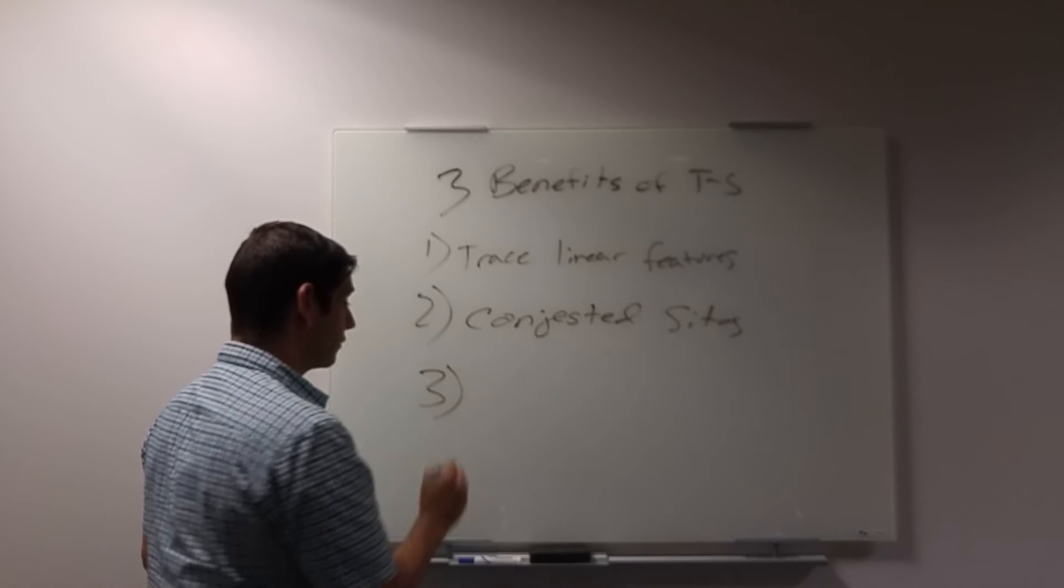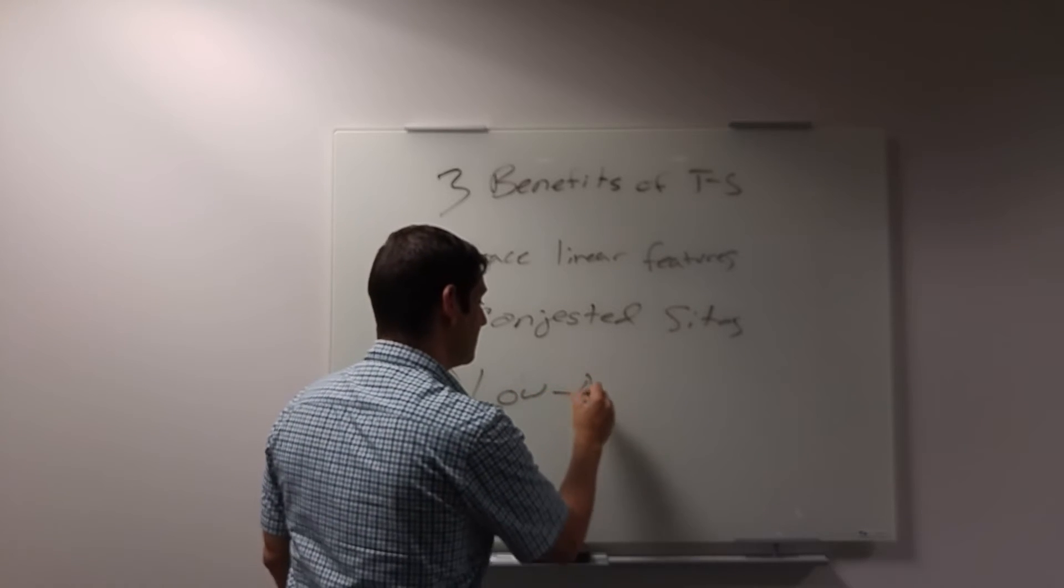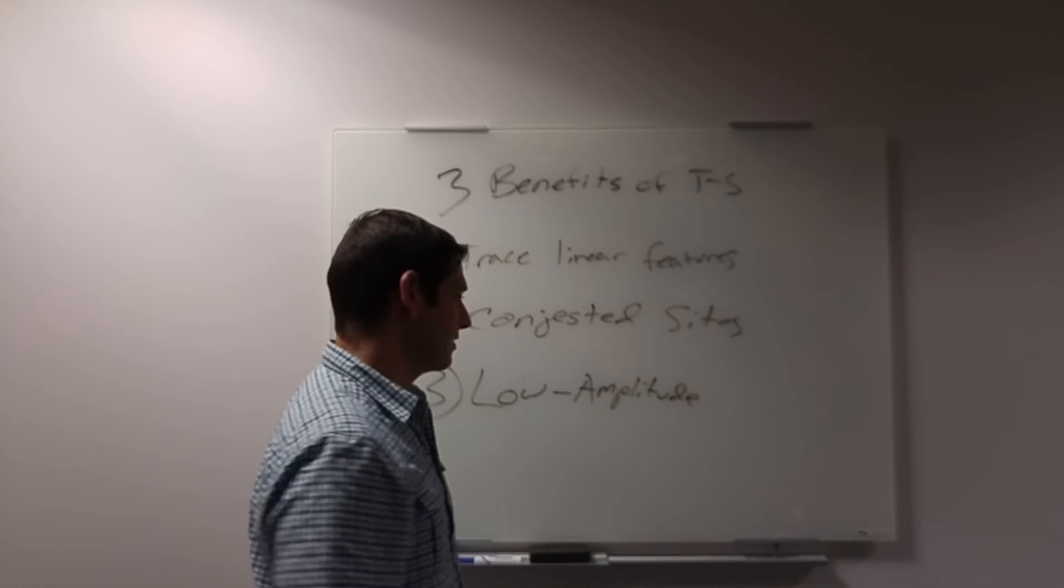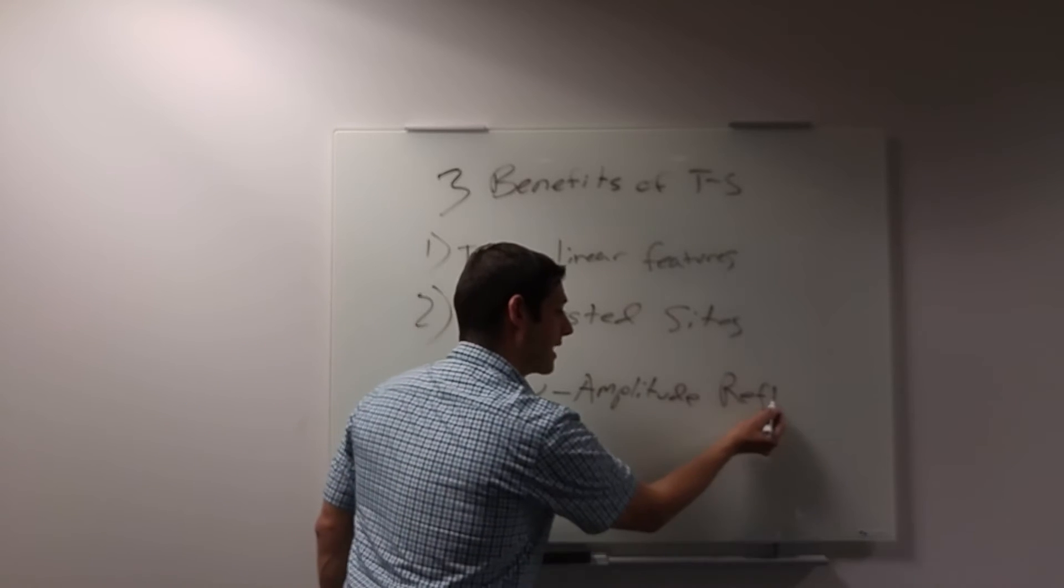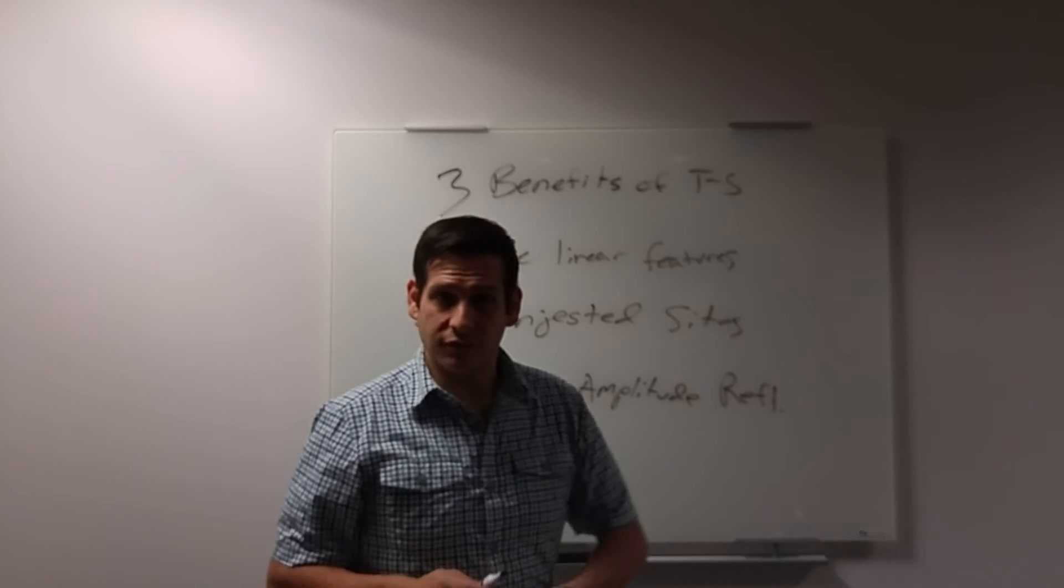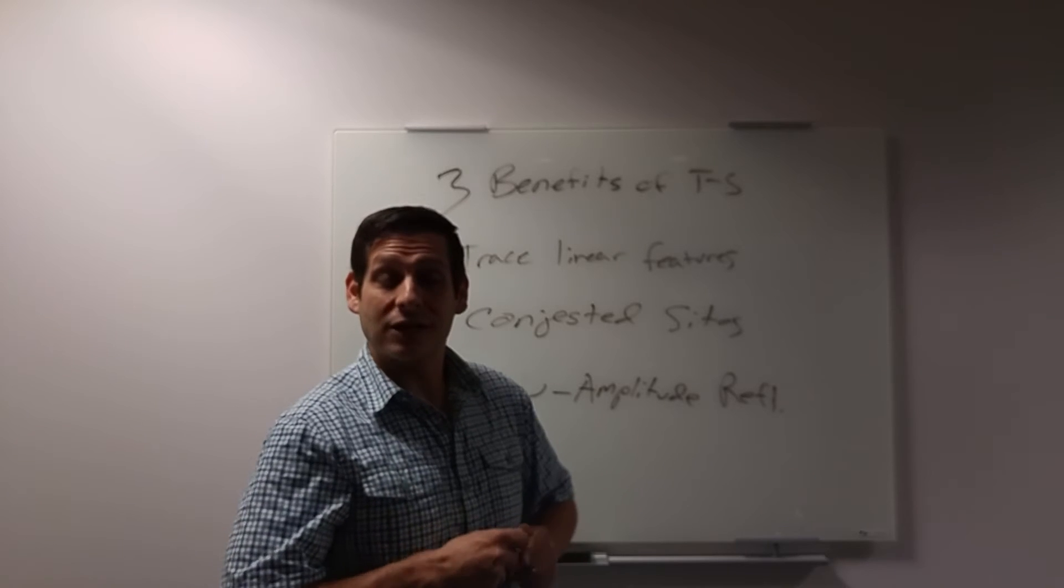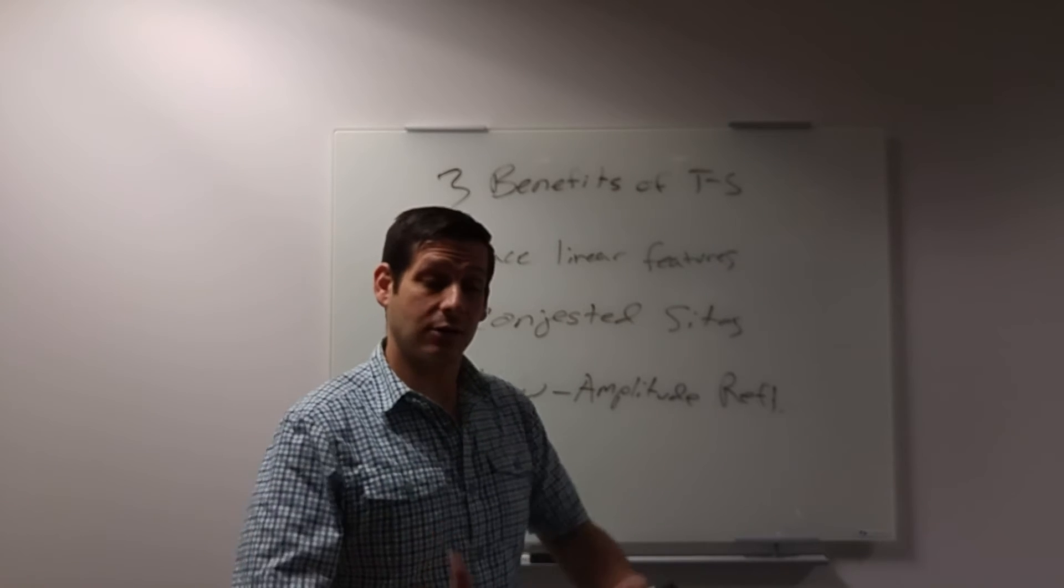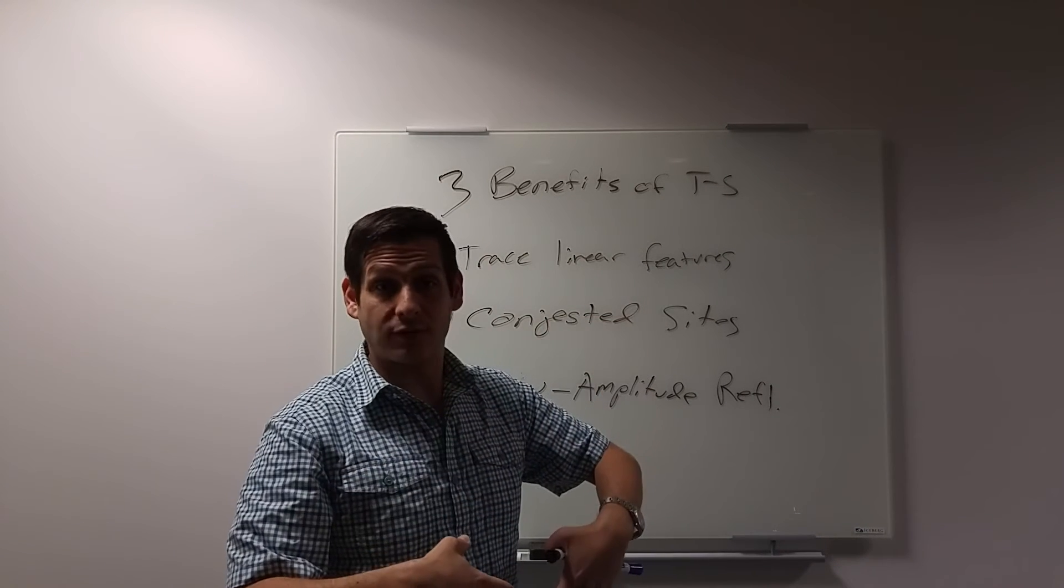Number three, third benefit is identifying low amplitude reflections. So what's a low amplitude reflection? Well, let's start with what a high amplitude reflection is. A high amplitude reflection is when you're going through sand and you hit a metal pipe that creates a high amplitude reflection.